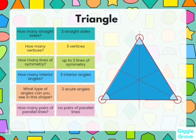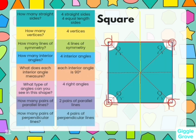A triangle has three straight sides, three vertices, up to three lines of symmetry, three interior angles, three acute angles, and no pair of parallel lines in the triangle.